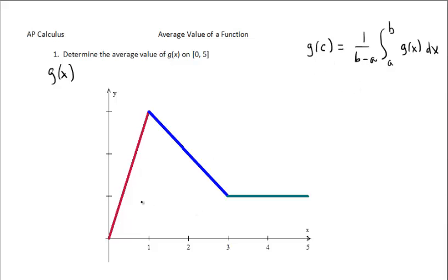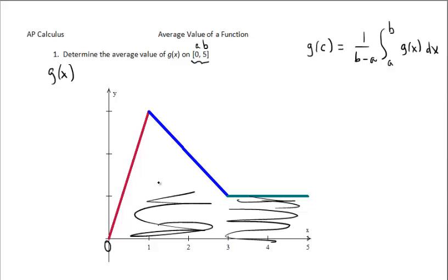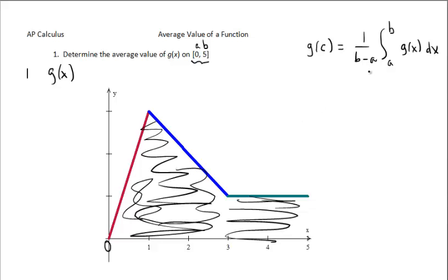Before we do that, let's get an idea of what we think the answer should be, that way we know that all our calculations work out right. On the interval from 0 to 5 — that's a to b, 0 to 5 — we have some area here, represented by the integral from a to b of g of x dx.